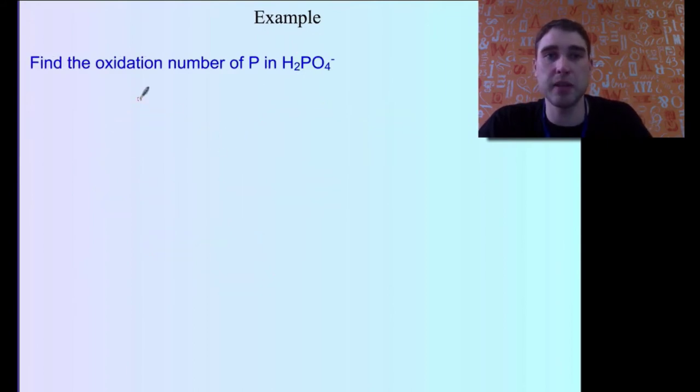Let's look at another example. Find the oxidation number of P in this molecule here. And notice there's a charge now. So we're going to do the same thing. So 2 times plus 1, because that's the oxidation number of hydrogen here, plus X, which is our phosphorus that we're looking for, plus 4 times minus 2 for the oxygens that we had there.